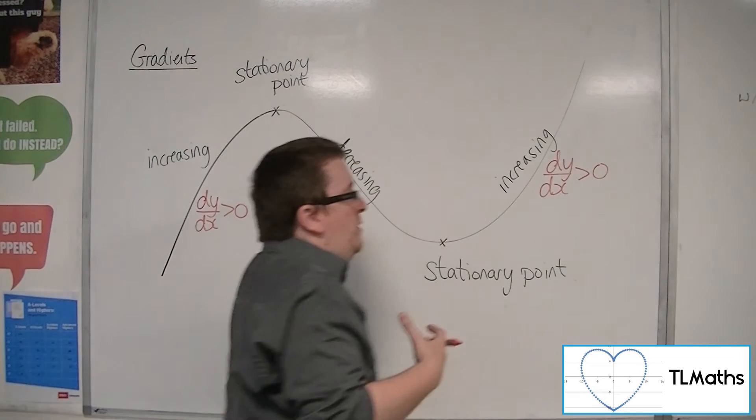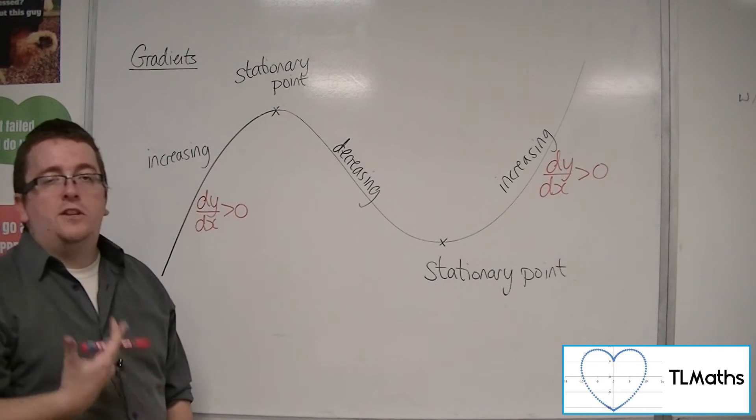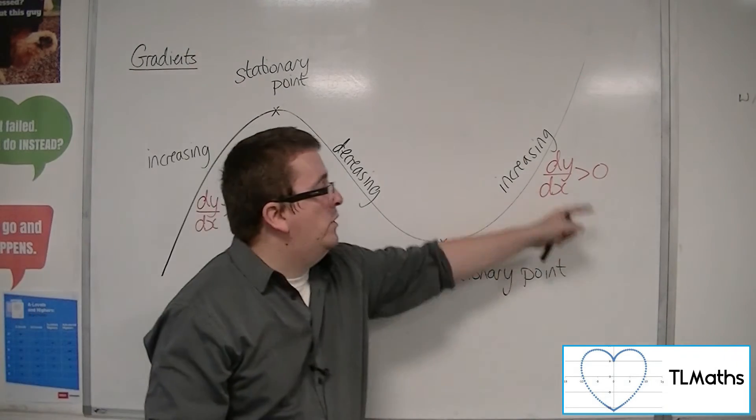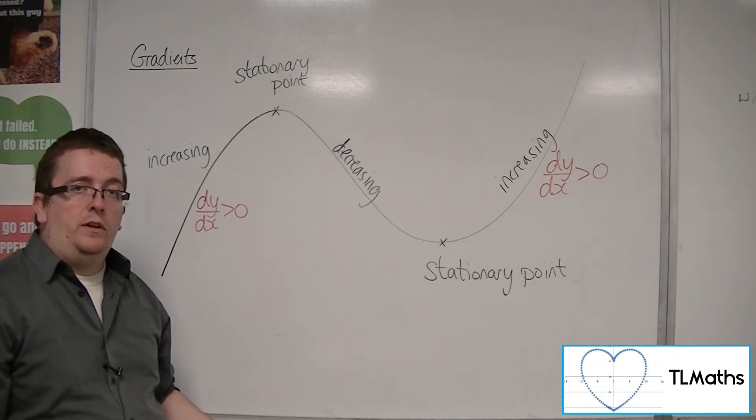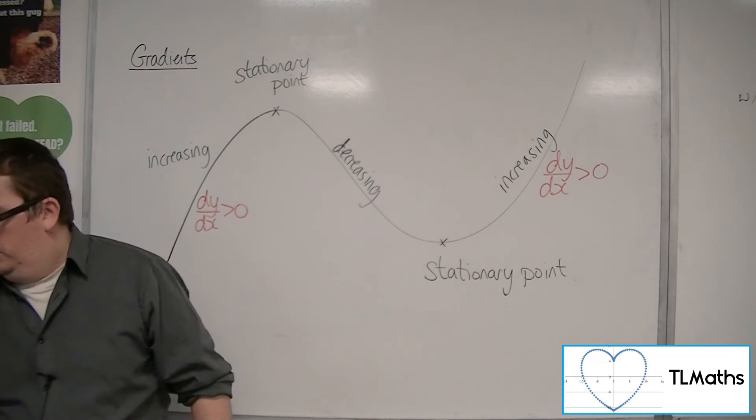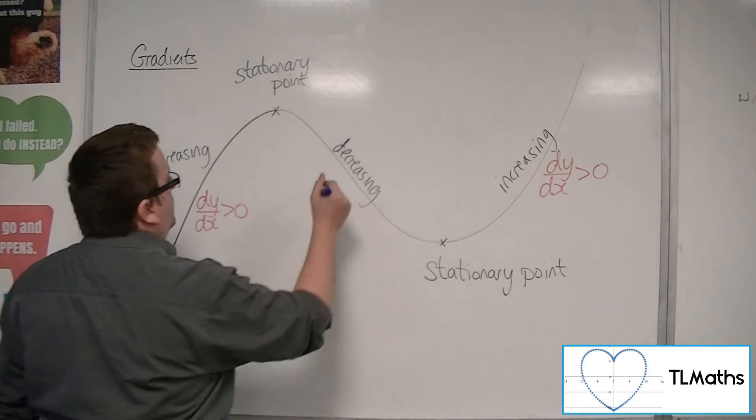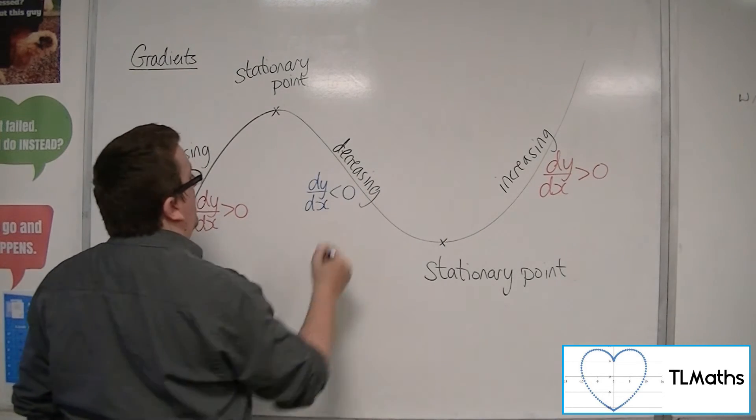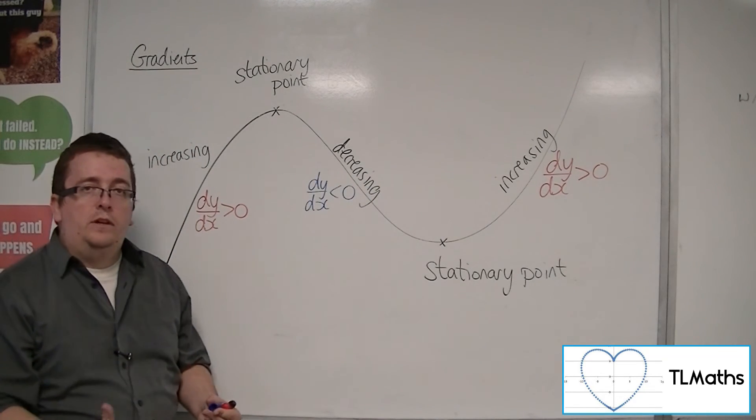So if you want to determine where the gradient of a curve was positive, you could put it greater than 0 and then solve that inequality. So for decreasing, this is where dy by dx is less than 0, where it is negative, where the gradient of the tangent is negative.